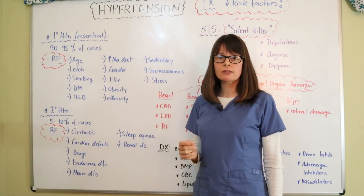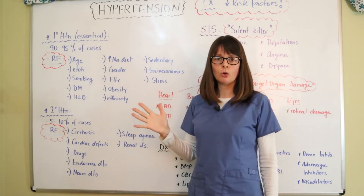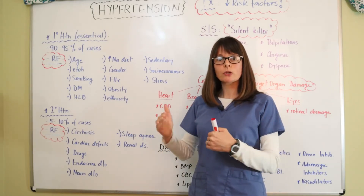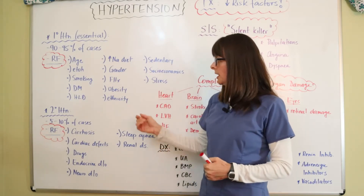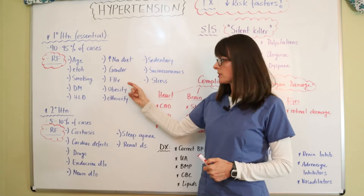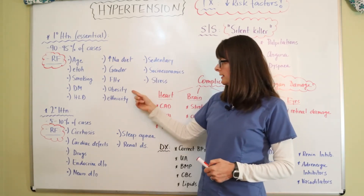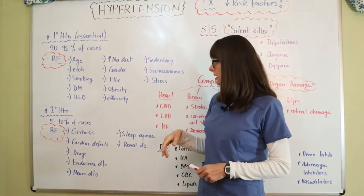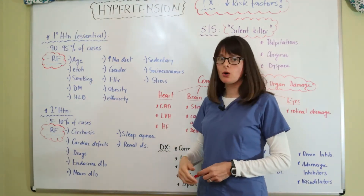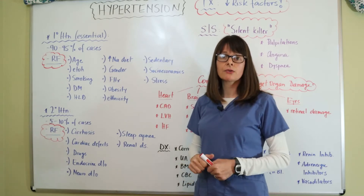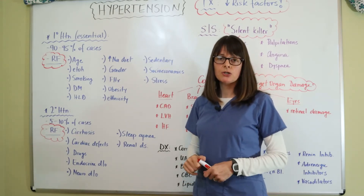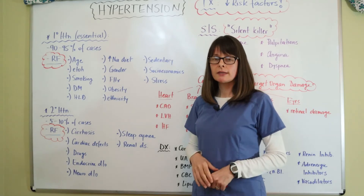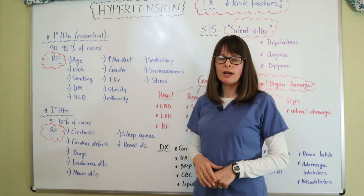Gender is a risk factor: male patients from about middle adulthood to early older adulthood are at higher risk, but right around age 65 it switches over and female patients become at higher risk for hypertension. Family history is certainly a risk factor as well as obesity, which often goes along with a sedentary lifestyle, diabetes, and hyperlipidemia. Research has shown that Black Americans as well as Mexican Americans have a higher risk for high blood pressure, and certain blood pressure medications work better for certain ethnicities, which comes into play in medication treatment.